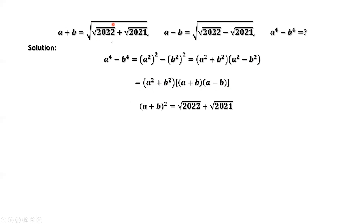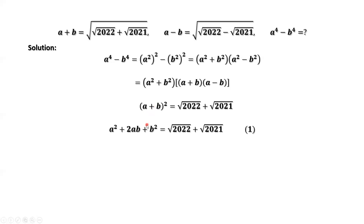From the first given equation, we take squares on both sides and expand the left-hand side. We have A squared plus 2AB plus B squared equals the square root of 2022 plus the square root of 2021, all squared.